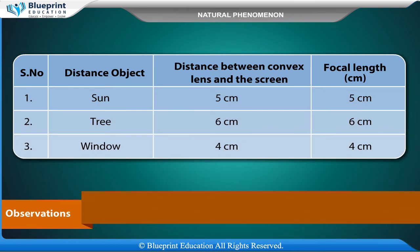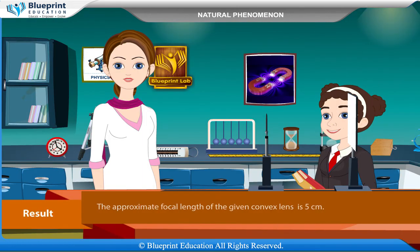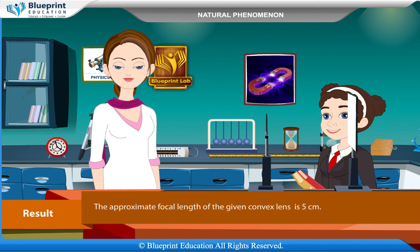Observations table — Distant object, distance between convex lens and screen, focal length in cm: (1) Sun: distance = 5 cm, focal length = 5 cm. (2) Tree: distance = 6 cm, focal length = 6 cm. (3) Window: distance = 4 cm, focal length = 4 cm. Result: The approximate focal length of the given convex lens is 5 cm.